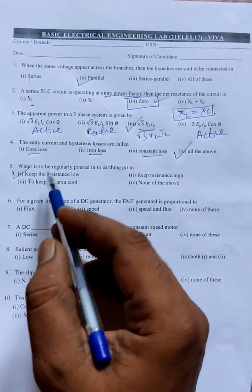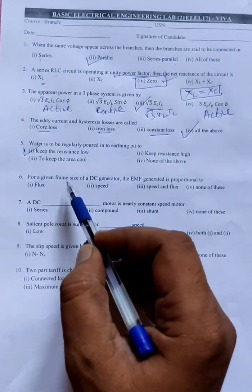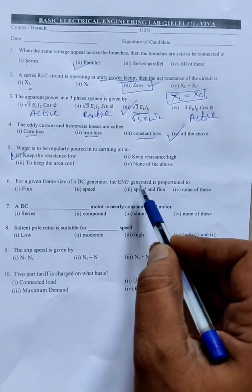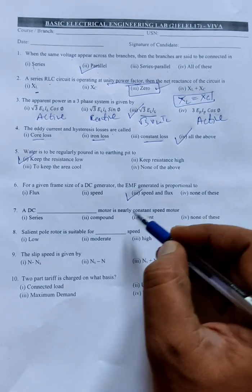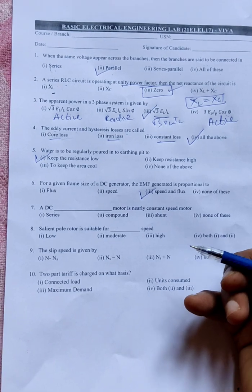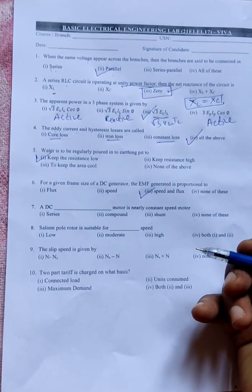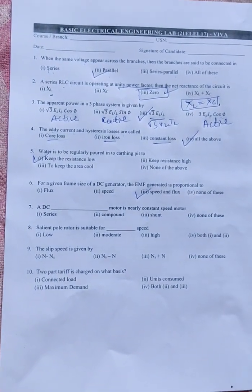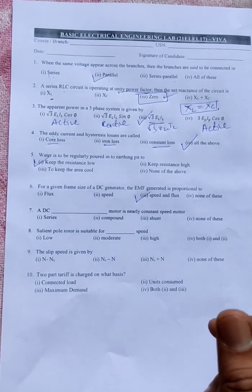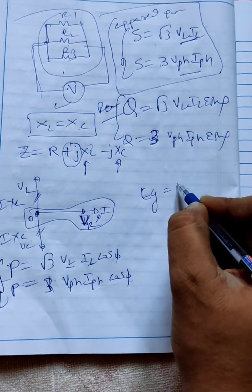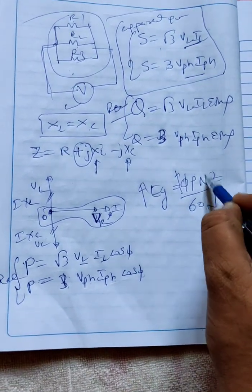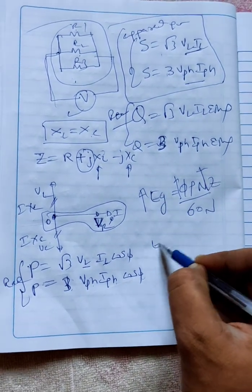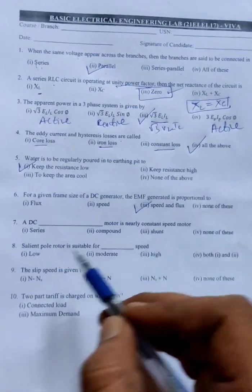Next, for a given frame size of DC generator, the EMF generated is proportional to speed and flux. Mechanical input is required, electrical is the output. Whatever speed the armature runs at and at that particular speed it's going to cut the flux, based on that EMF will be generated. So EMF generated should be proportional to both speed as well as flux. If you want, you can write an equation. What is EMF formula? E equals pi P Nz by 60A. If flux increases, generated voltage increases. Speed increases, voltage generated also increases. That's why Eg is proportional to flux and speed. I selected that option.